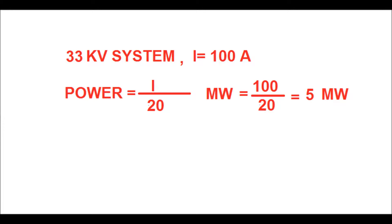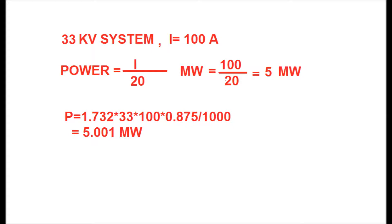The equation is P = √3 × V × I × cos φ, with power factor taken as 0.875: P = 1.732 × 33 × 100 × 0.875 divided by 1000, giving 5.001 megawatts. So by thumb rule, for a 33 kV system, just divide the current by a factor of 20 to get the power in megawatts.